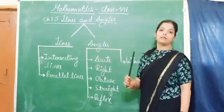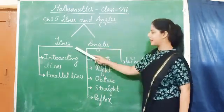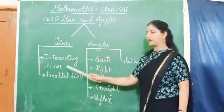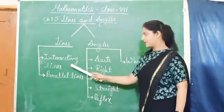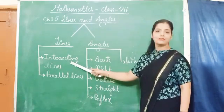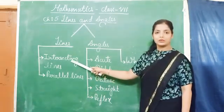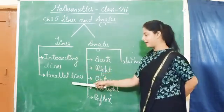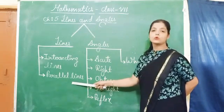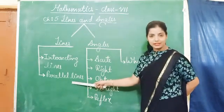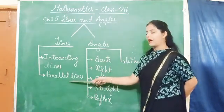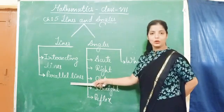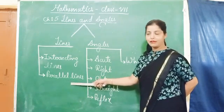In Class 6, you have studied various types of lines and angles, like intersecting lines and parallel lines. Intersecting lines — when two lines cut each other at a point — are called intersecting lines. Parallel lines — when two lines do not intersect each other and they never meet however far they are extended — are called parallel lines.